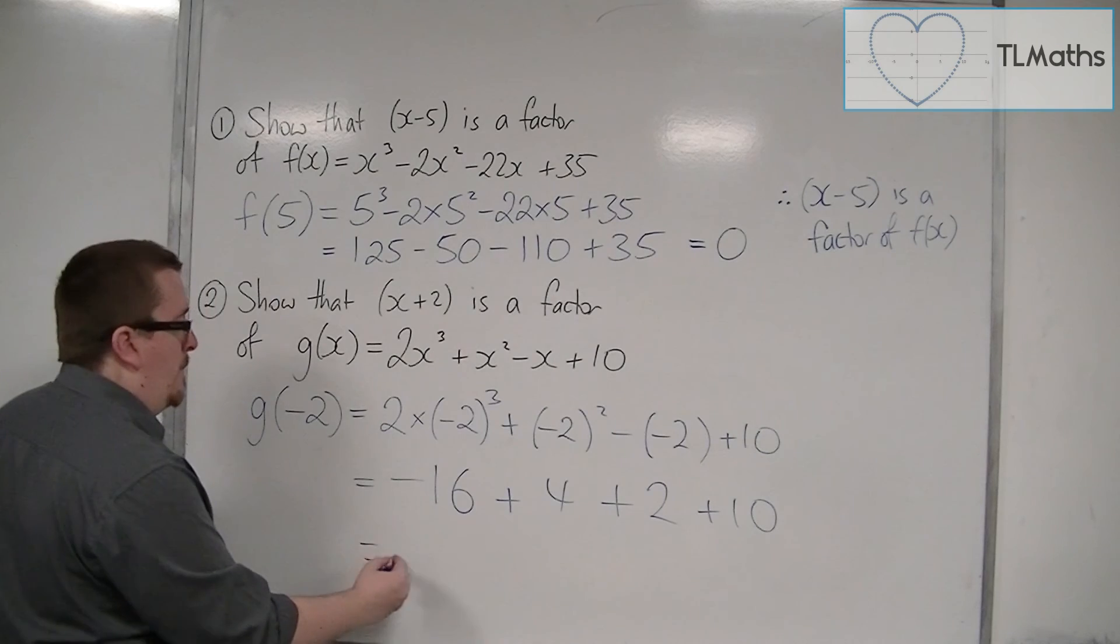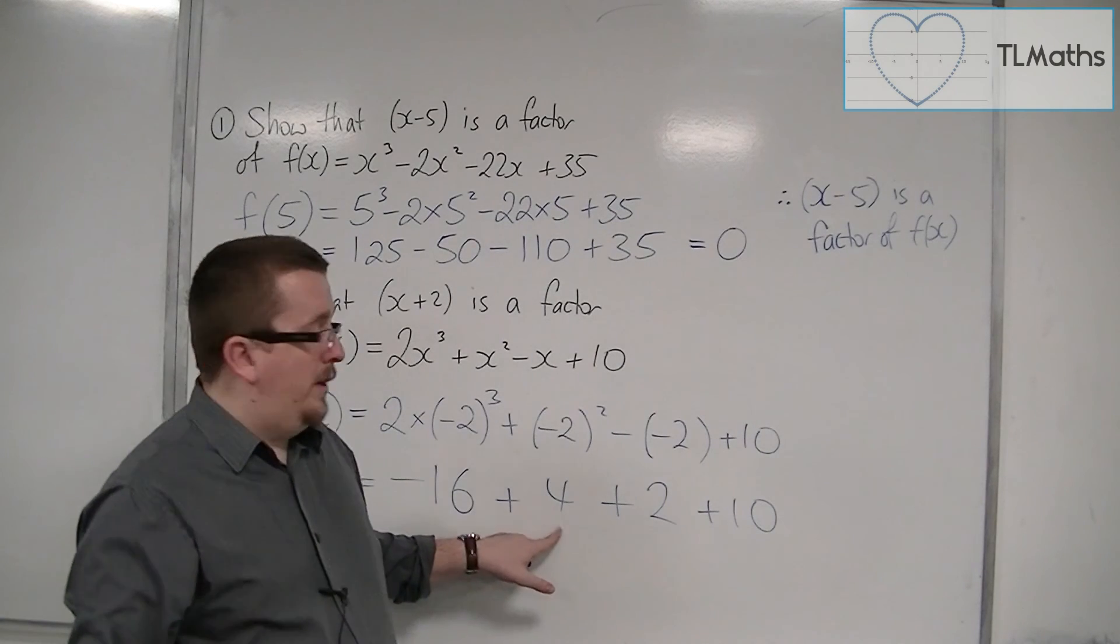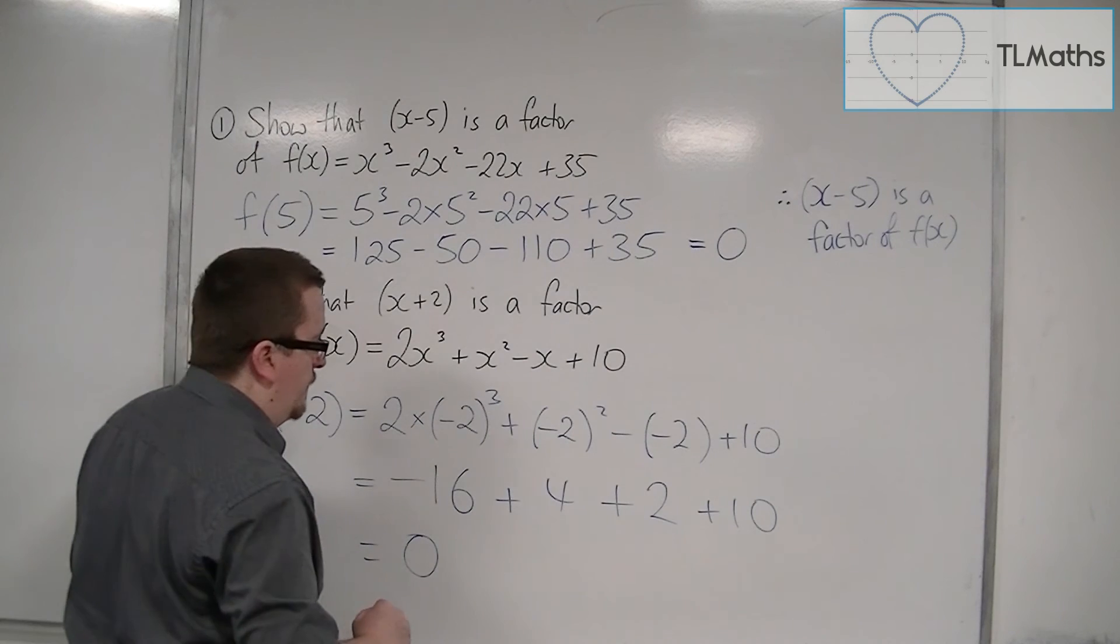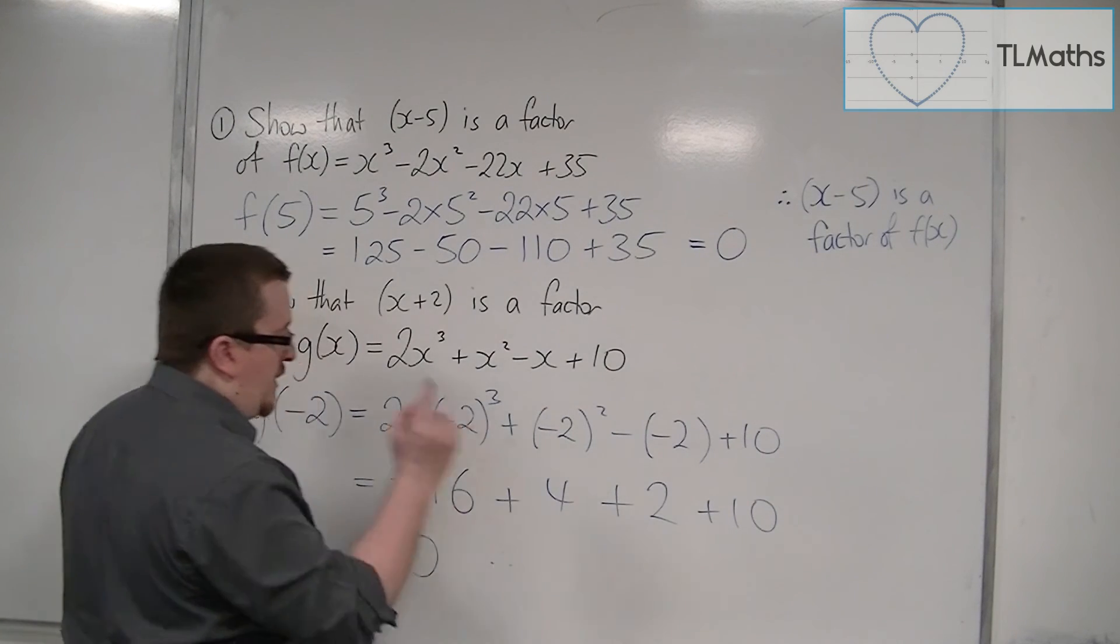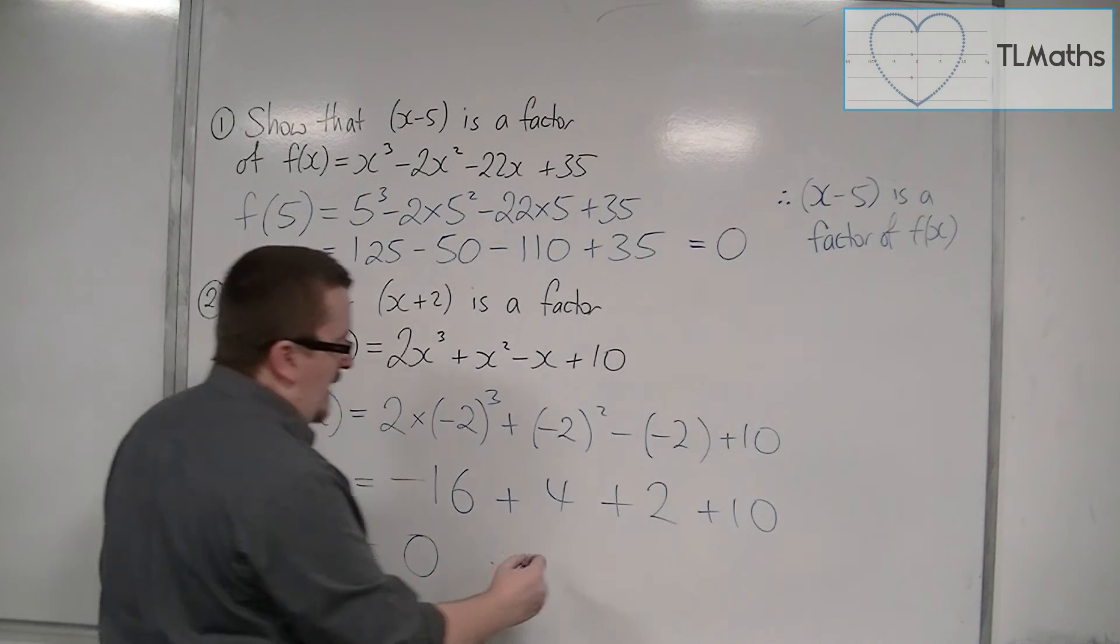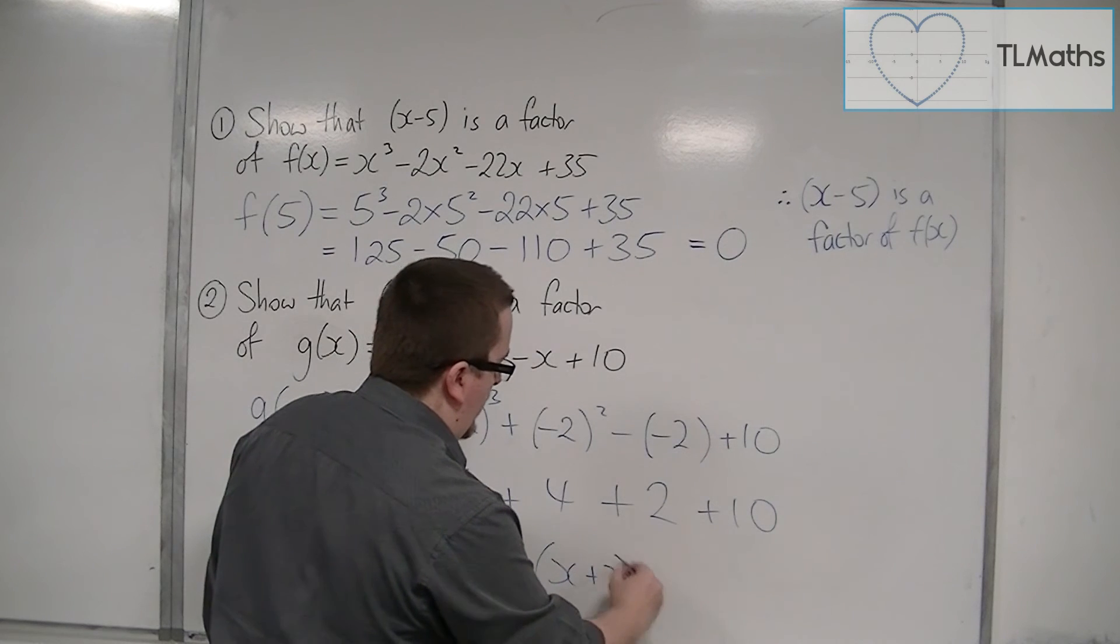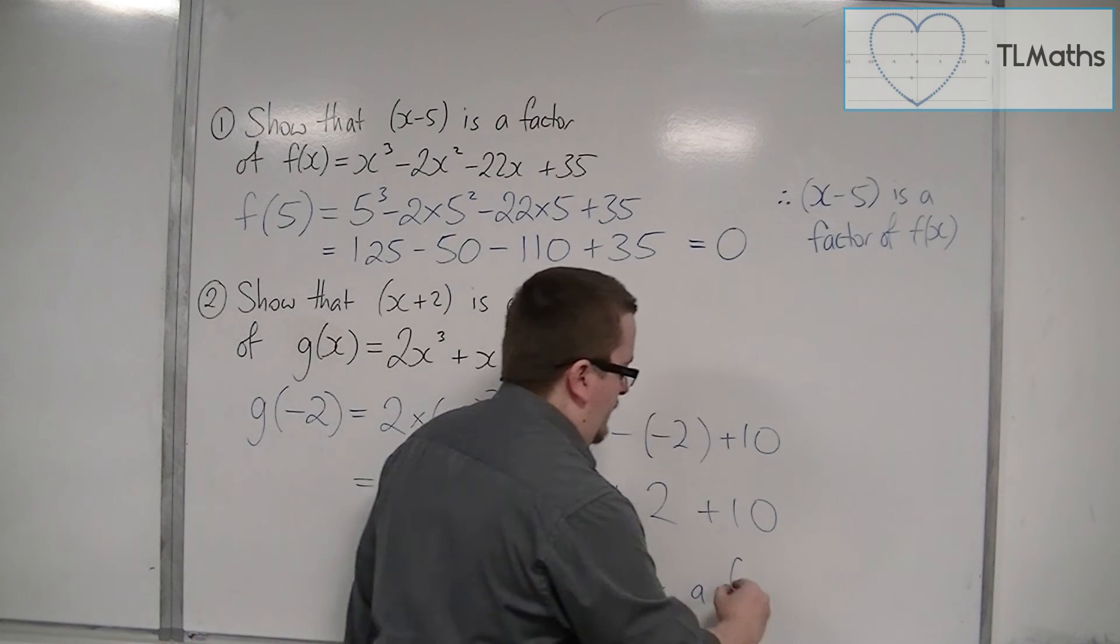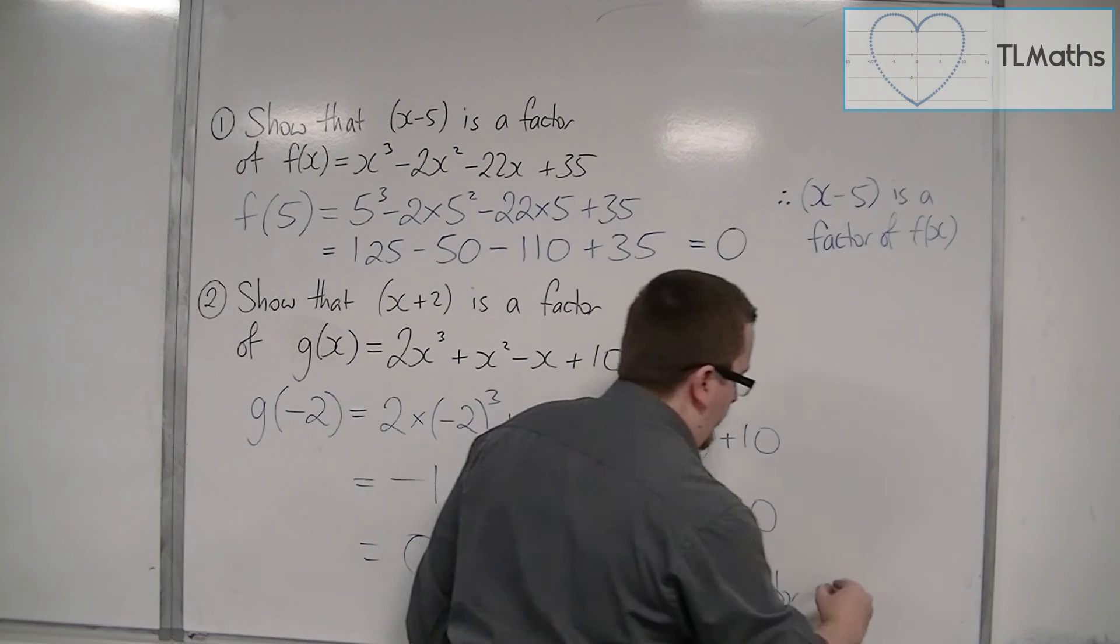So we've got -16, plus 4 is -12, plus 2 is -10, plus 10 is 0. Therefore, the concluding statement: x plus 2 is a factor of g(x).